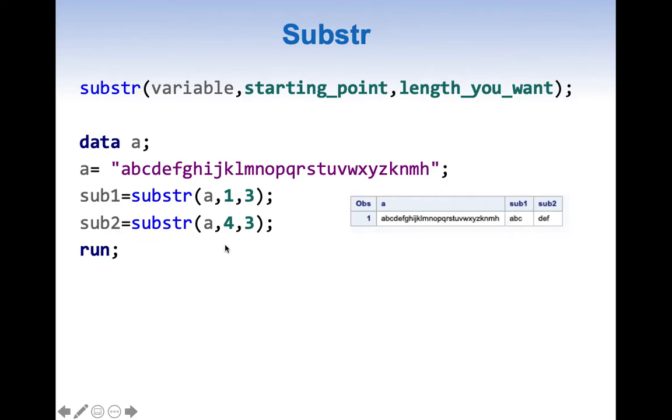Sub2 is doing a similar thing. Instead, we're setting the starting point as 4, that's d, and the length is 3. So it extracts from d and goes till f, giving us def. So substr function helps us extract part of a string by giving a starting point and the length we want.